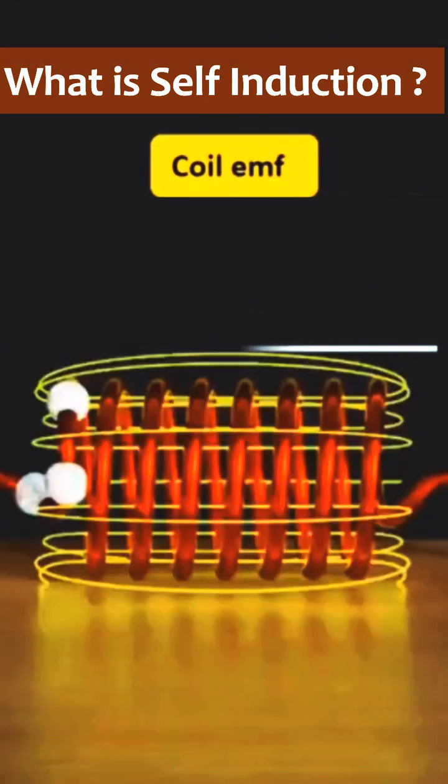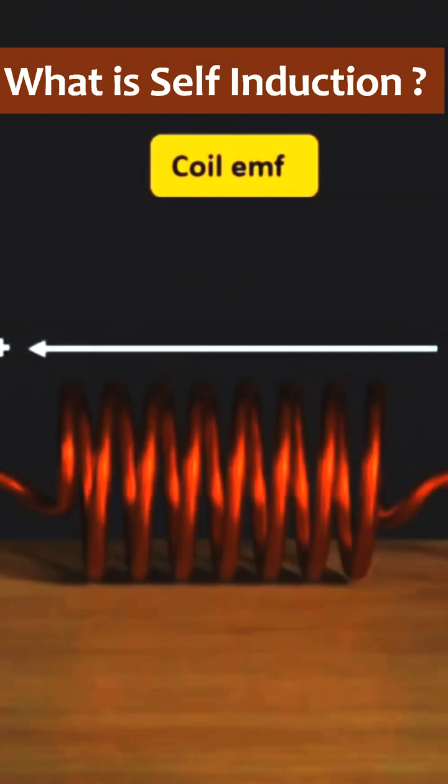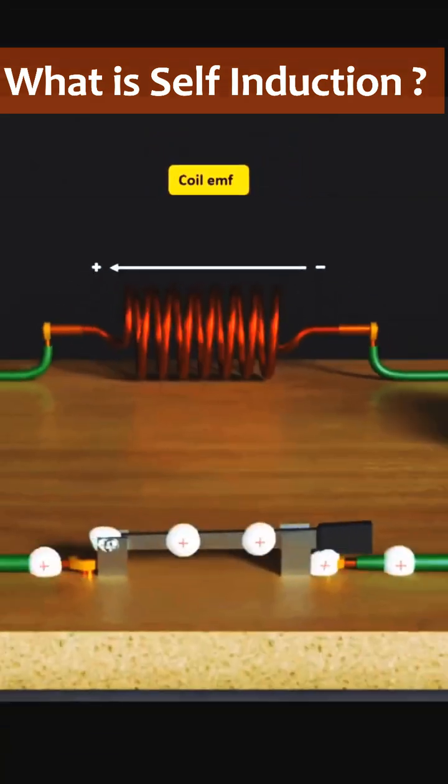Therefore, induced EMF will begin flowing in the opposite direction to generate an opposing magnetic field so that net current flowing in the circuit will become zero.